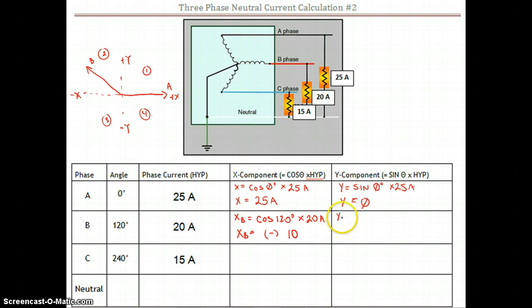And when we punch this guy in for the y component, or the opposite of that right angle triangle, sine of 120 degrees times 20 amps, we should find that that guy provides us with a positive value.